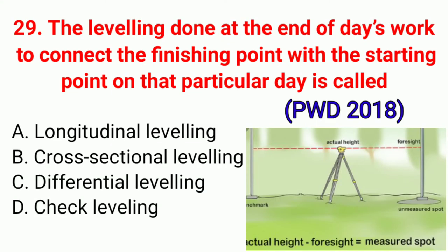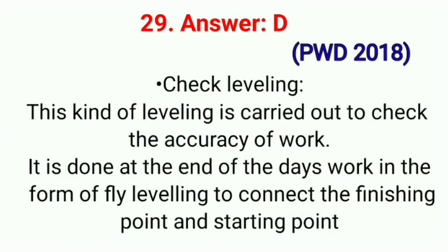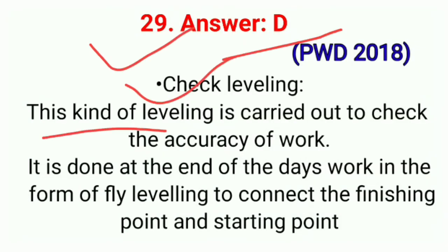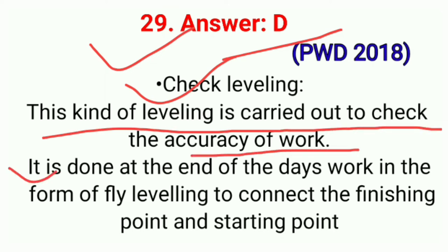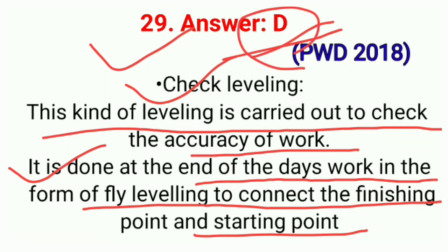Question No. 29. The leveling done at the end of day's work to connect the finishing point with the starting point on that particular day is called — correct option D: Check leveling. This kind of leveling is carried out to check the accuracy of work. It is done at the end of day's work in the form of fly leveling to connect the finishing point and starting point. Correct option D.